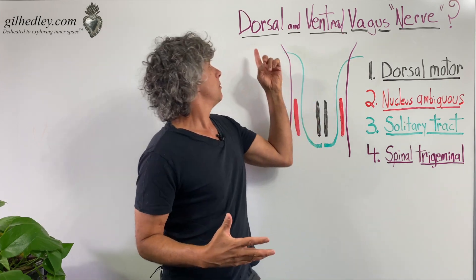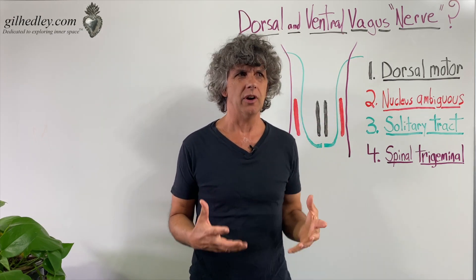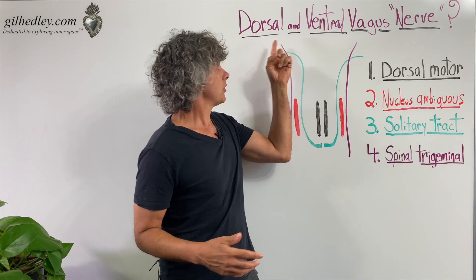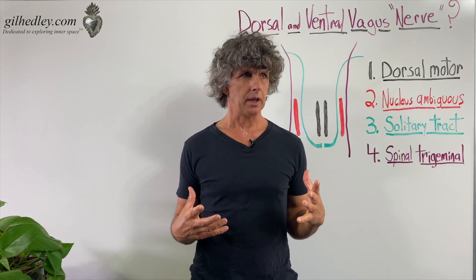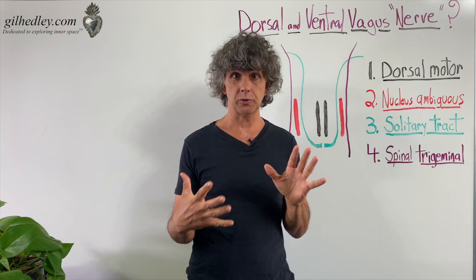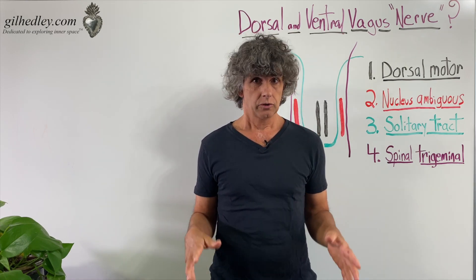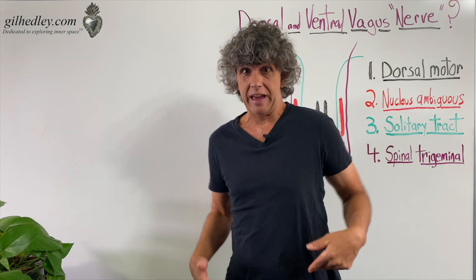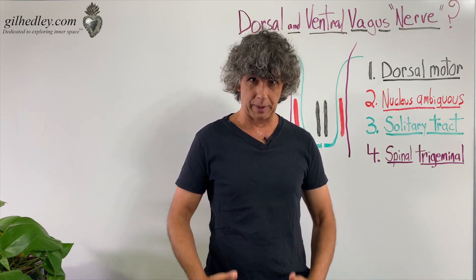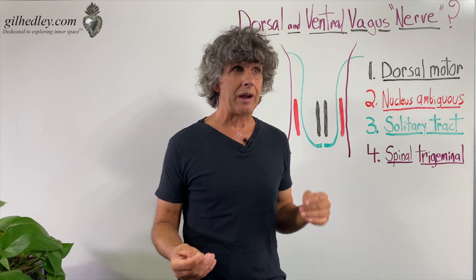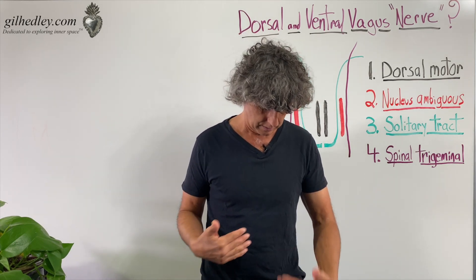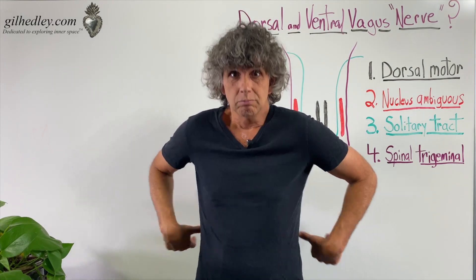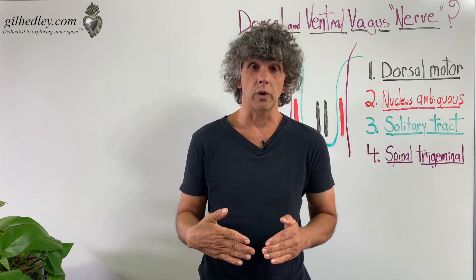What does he mean by dorsal and ventral vagus nerve? Folks get confused about this. Dorsal and ventral are adjectives describing relative positions in space that we use in anatomy. The dorsum is the back side of the whole body; the ventral aspect is the front side. So something that's dorsal is towards the back, and something ventral is towards the front.